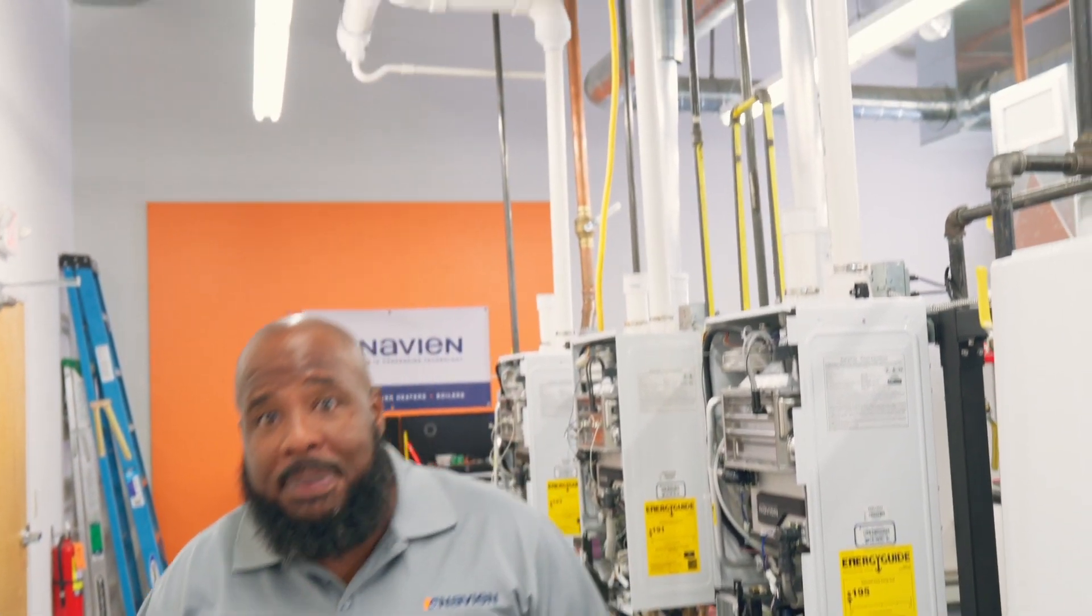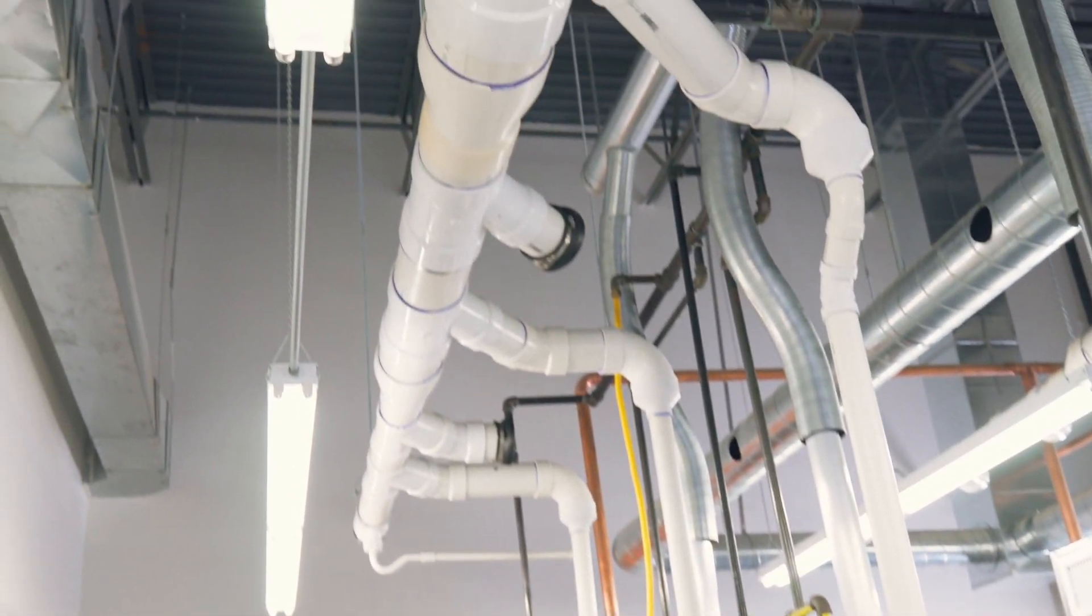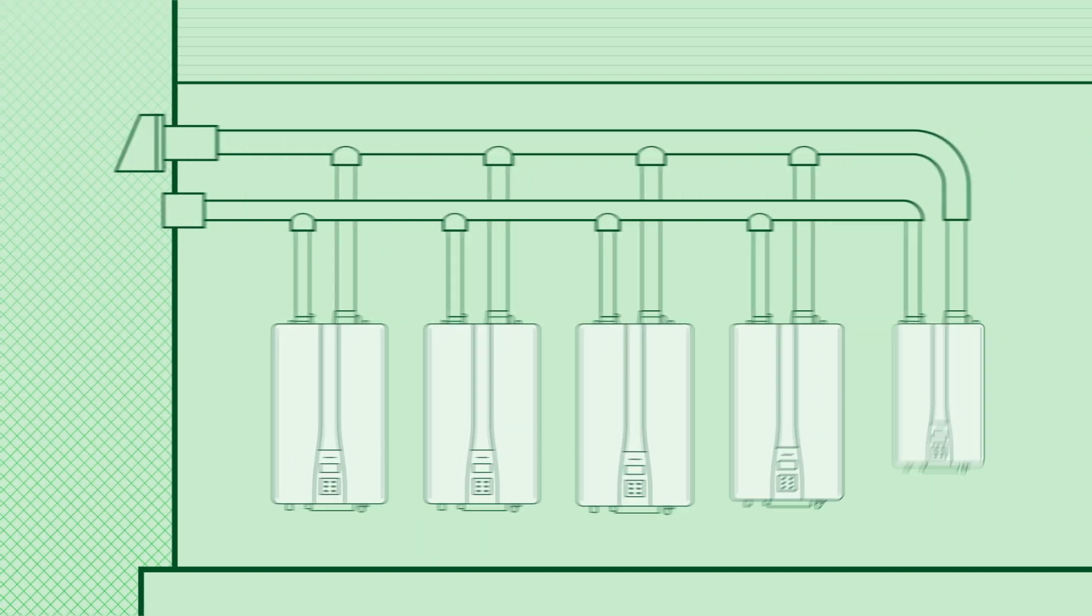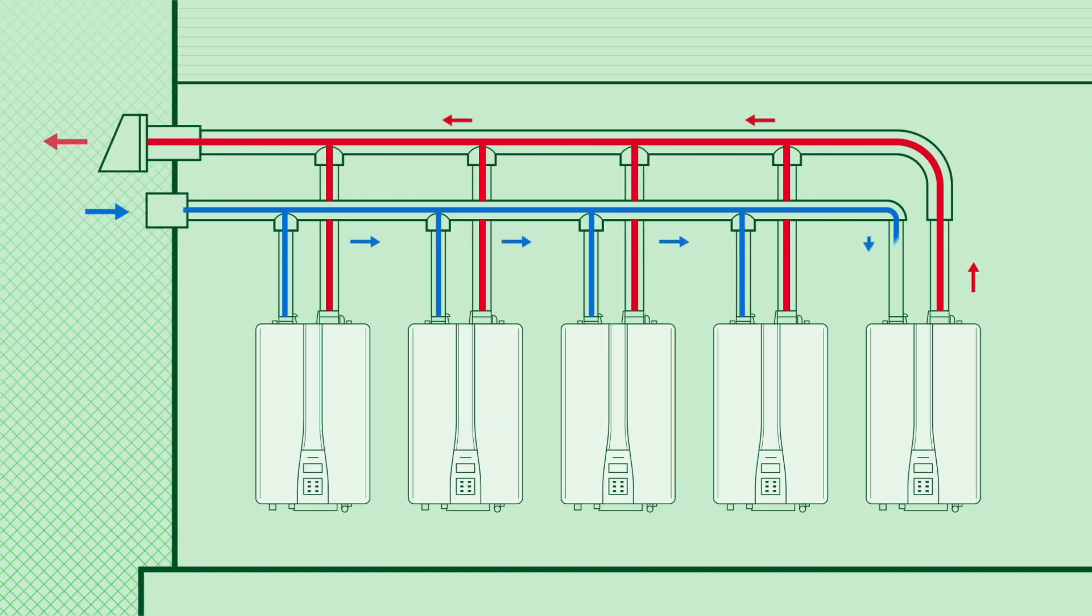What we can do is vent all these systems into one main header and send that main header out for distribution of the exhaust and the intake as well.